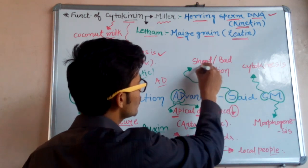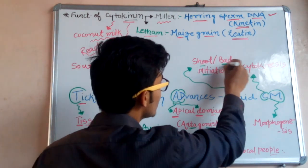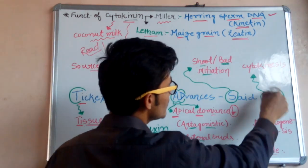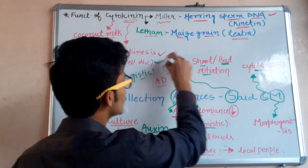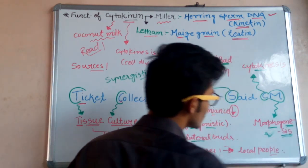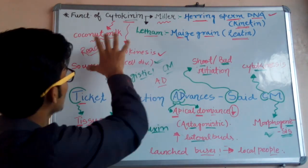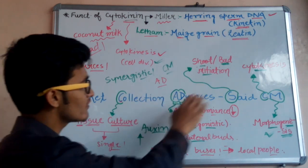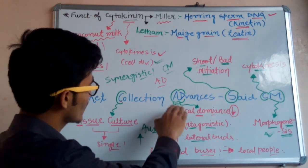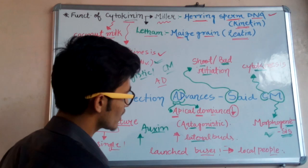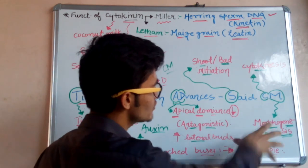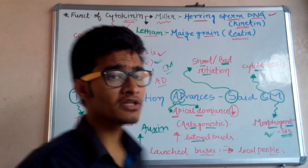'S' in 'Said' means shoot initiation, or we can say bud initiation. 'CM' has two capital alphabets — C and M. 'C' means cytokinesis, which is cell division, and 'M' means morphogenesis. This is a very important term. Let us revise: Ticket Collection Advances Said CM — tissue culture, apical dominance decreases so growth of lateral buds increases, shoot or bud initiation, cytokinesis (cell division), and morphogenesis.